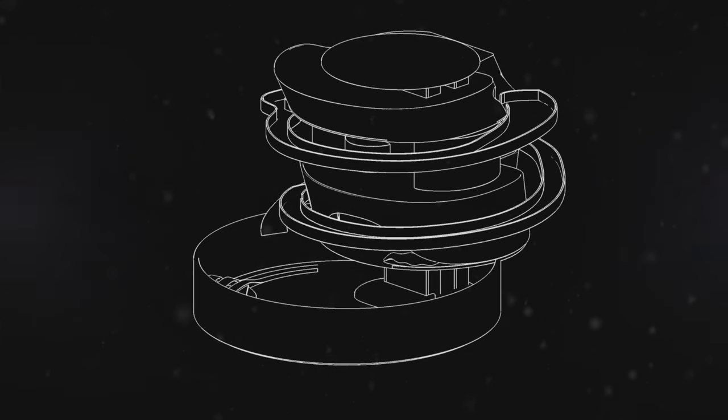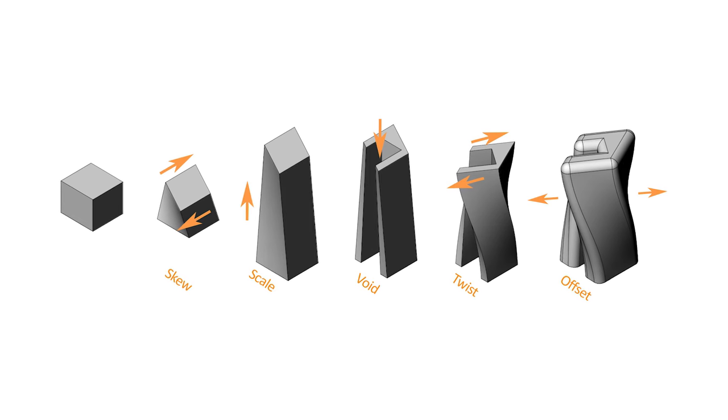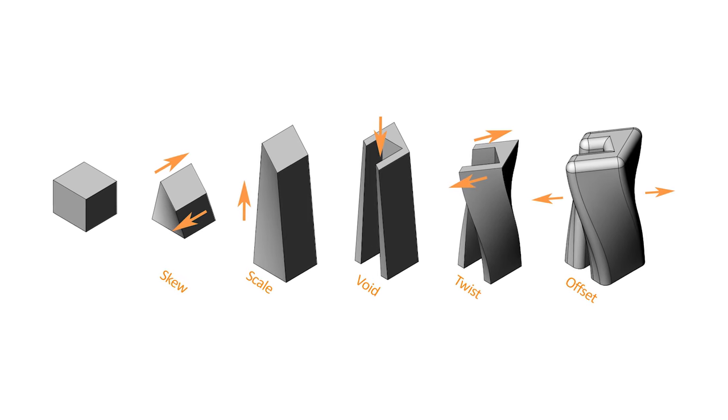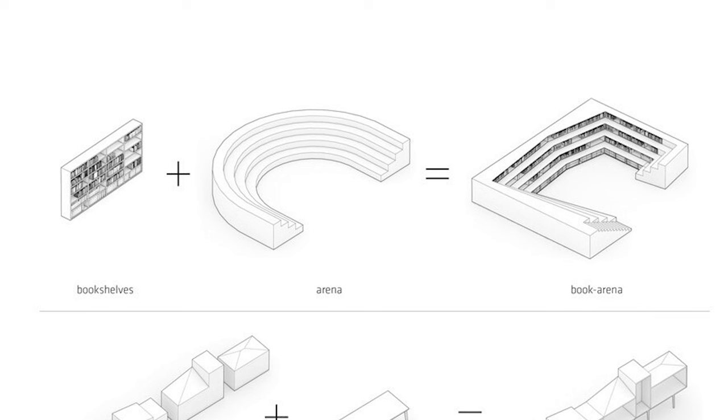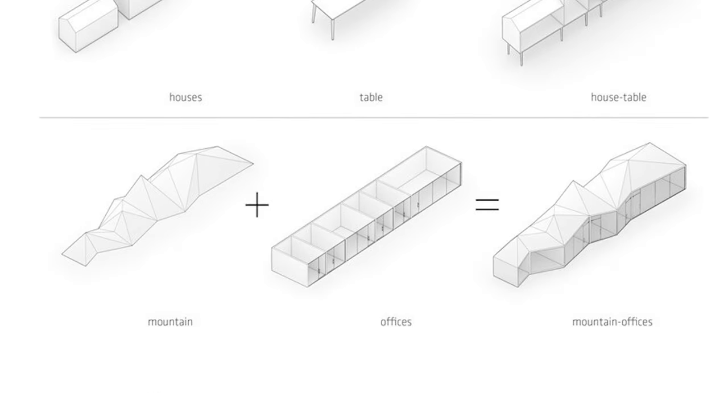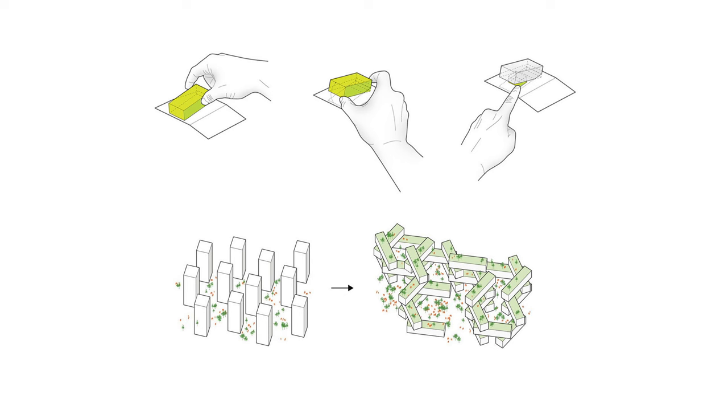Number two are form diagrams. These are usually evolutionary, showing how you've come up with your form — taking your concept, your initial idea, and showing how that has been formed into an actual mass, an actual piece of architecture. This is very much showing the process of how you got to your final form. I'll often use this to demonstrate my direction for the design and how I got from step one all the way to the final step.